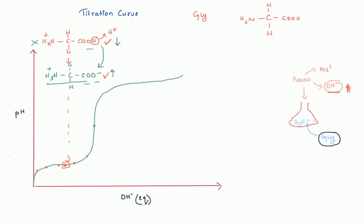That point — where only the COO⁻ form is present — is the midpoint of the steep rise. Moving further up the curve, there is no more H⁺ to be donated from COOH, since all the H⁺ from COOH have already been released into the solution.